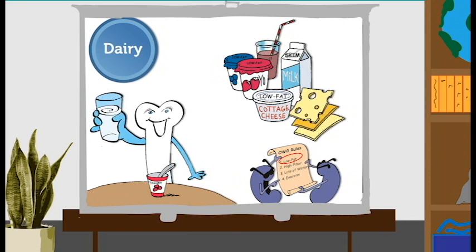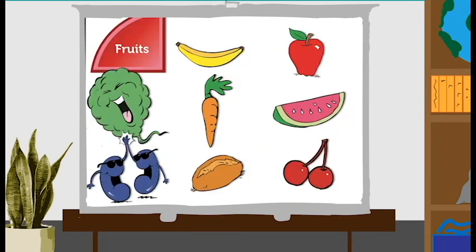Next is the fruit section. We've got a banana, an apple, a carrot, a watermelon, cherries, and what is that other one at the bottom? Very good. It's a sweet potato. Once again, two of these items don't belong. Everyone, look and see which one you think are not fruits. The carrot and the sweet potato. These belong in the vegetable section.